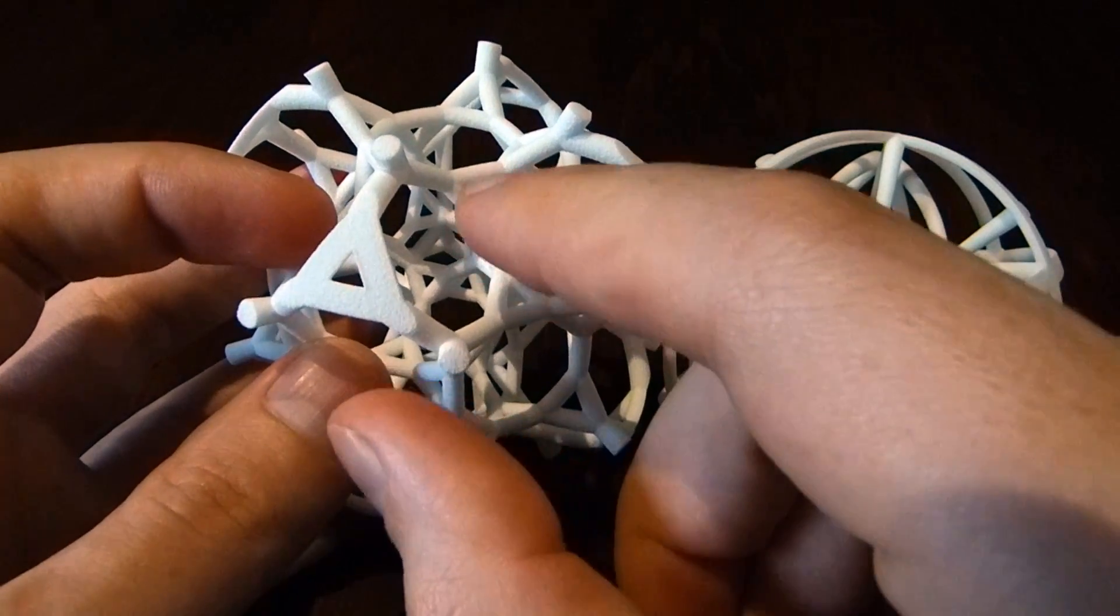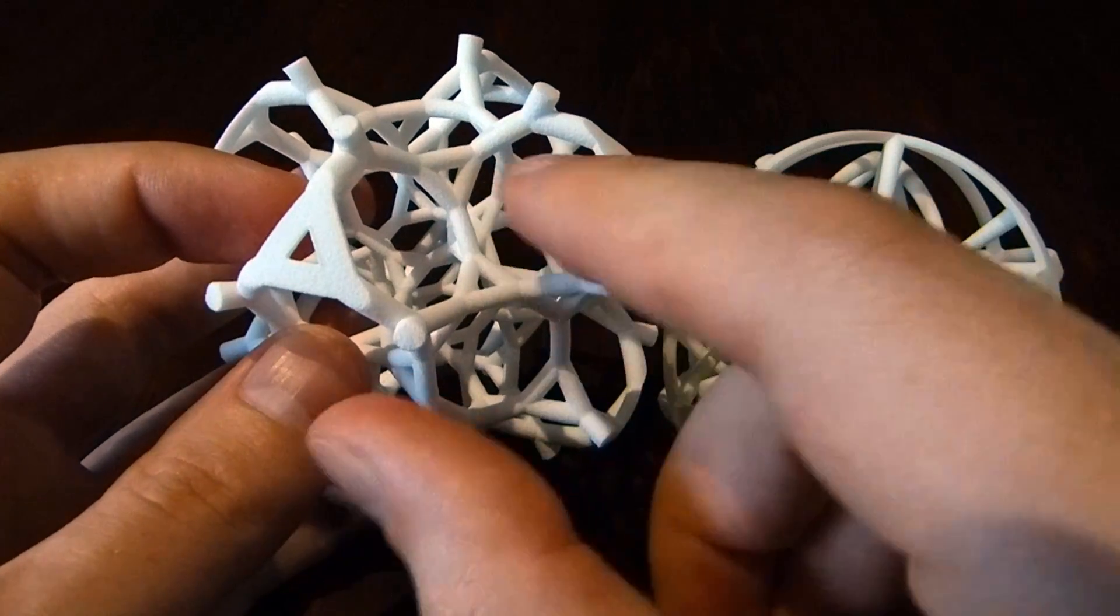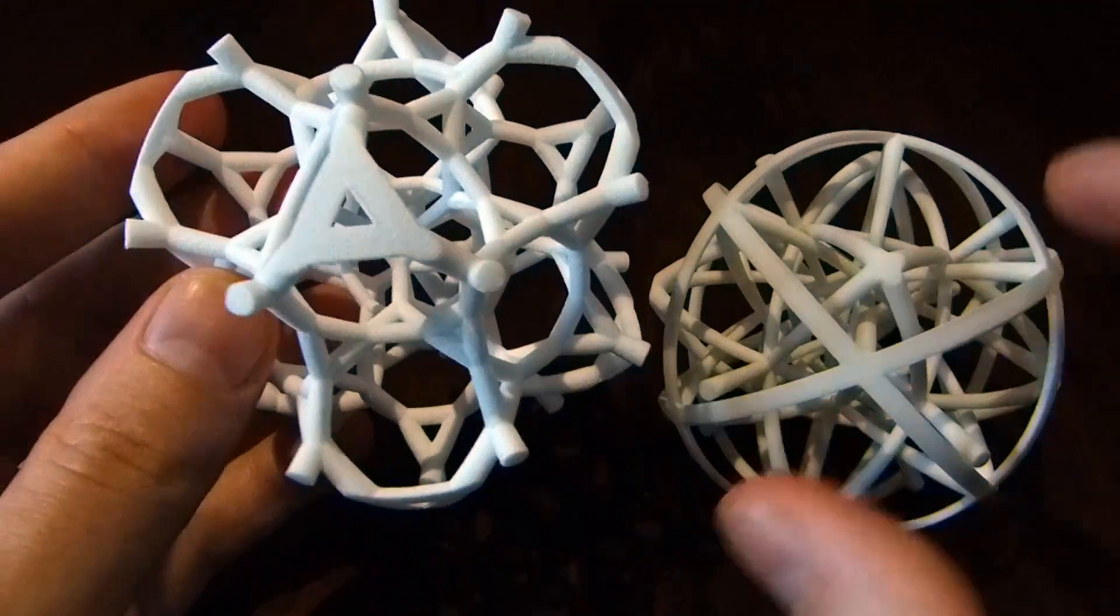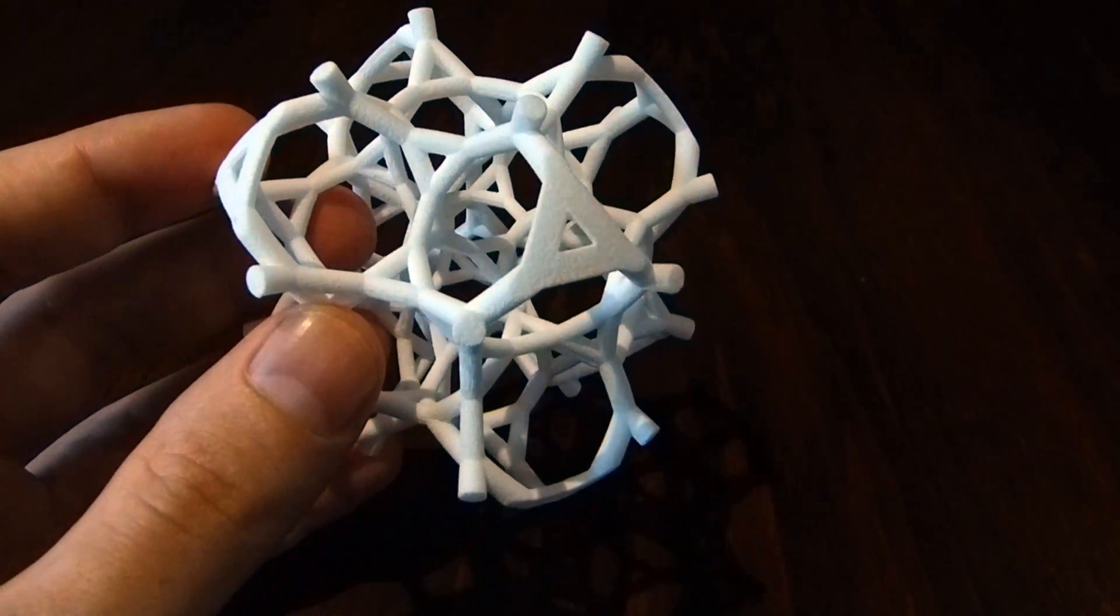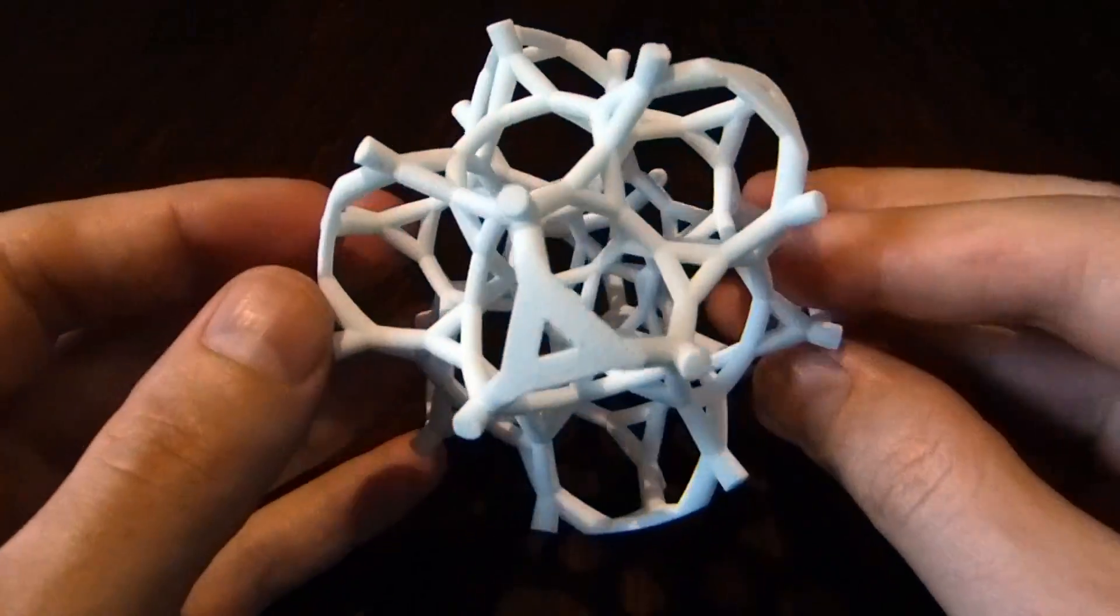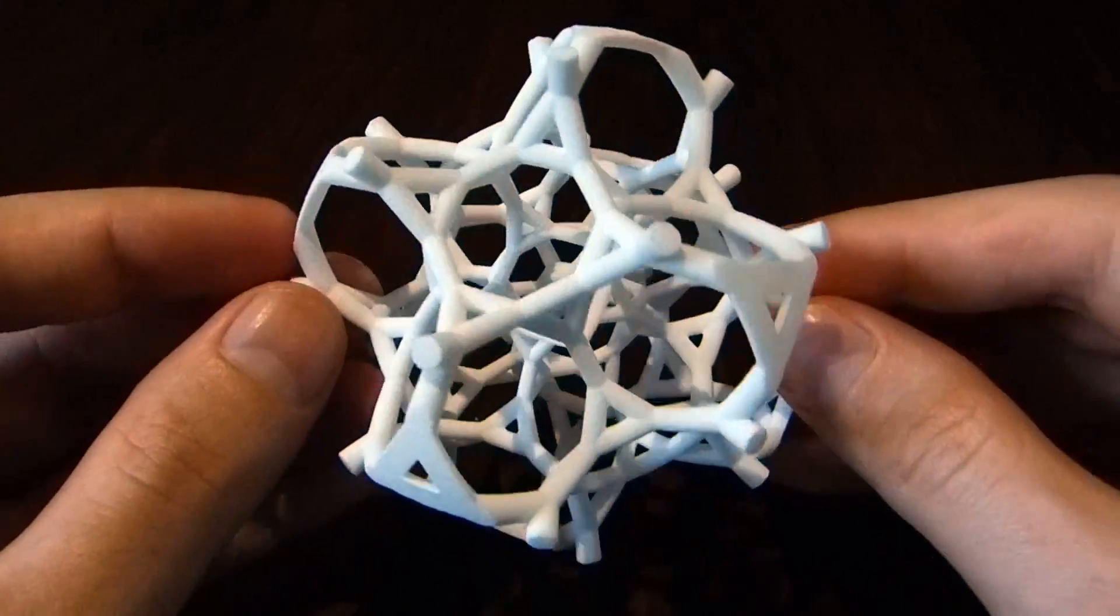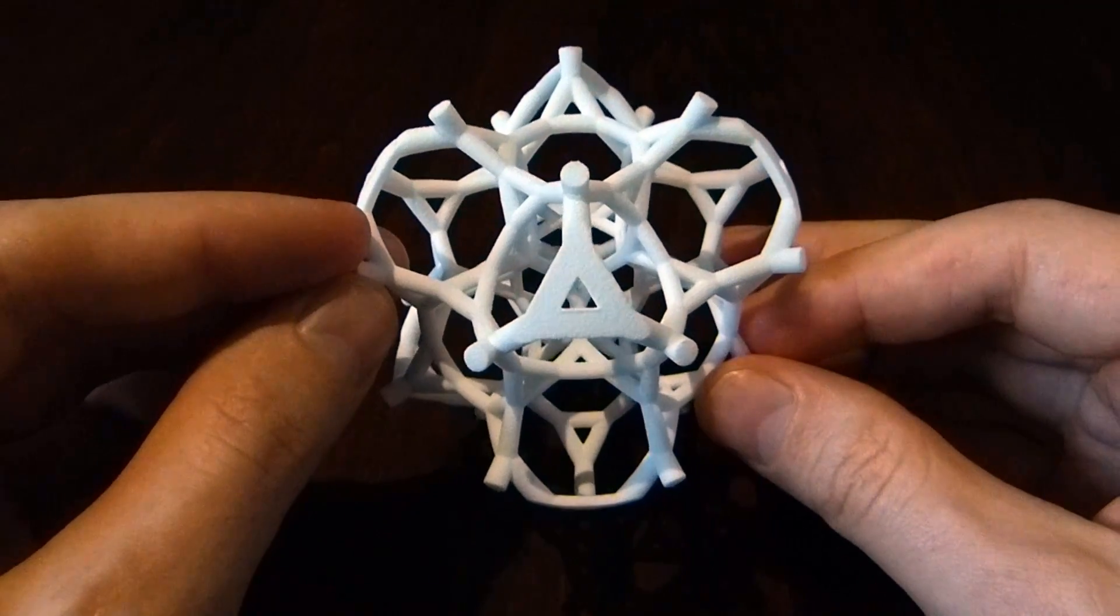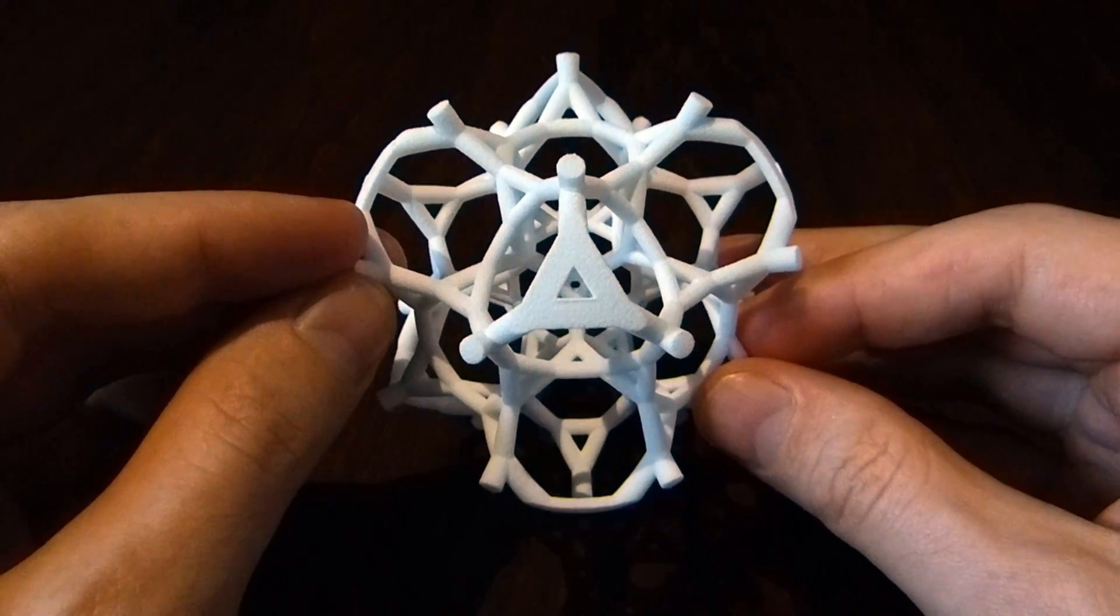So what happens is that little cube grows and grows and grows and then starts crashing into its neighbors. And you get this beautifully symmetric sort of halfway between the 24-cell and its dual. It's almost regular, but not quite, and it has all the same symmetries as the 24-cell does.